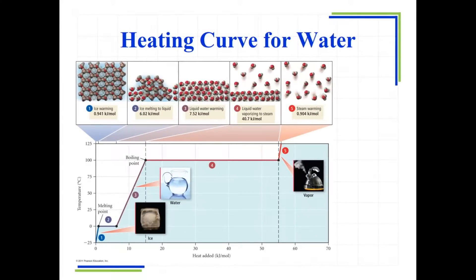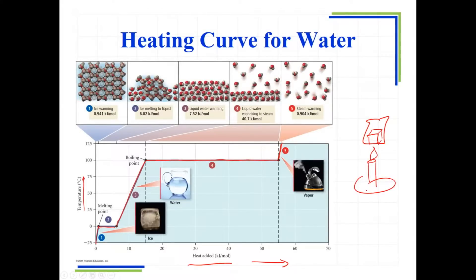What you see in red, this big line here, is what is called a heating curve. What's happening in this curve as we follow along is we are adding heat as we go in this direction. As we add heat, you might think that means we are raising the temperature, and we are in some cases. Let's say we take a beaker and put some ice cubes in it and add a Bunsen burner under it. What's going to happen is that ice cube is going to start at a really cold temperature — say, negative 25 degrees Celsius. It's not going to start melting until we get that ice up to its melting point.